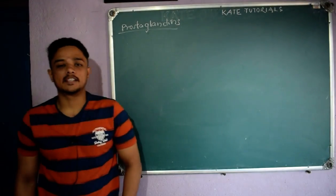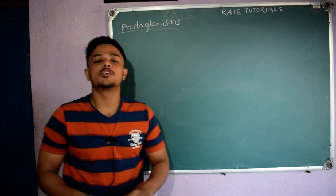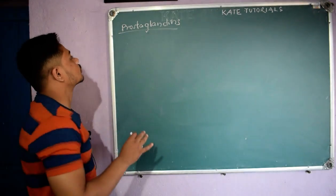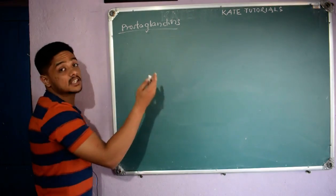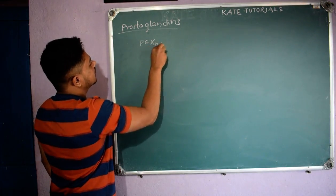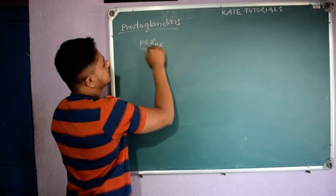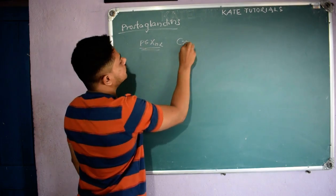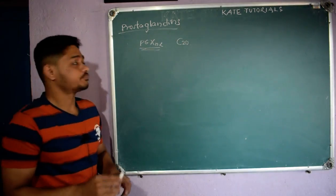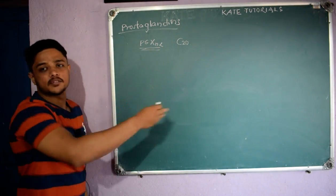Good morning friends, I am your Karthik and this is Karte Tutorials. In this video we are going to discuss about prostaglandins. They have the general formula PGXN alpha and contain 20 carbons, written as C20.